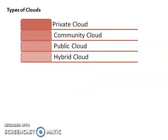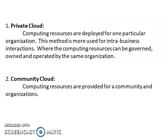Now I discuss various types of clouds: private cloud, community cloud, public cloud, and hybrid cloud. First is the private cloud. Computing resources are deployed for one particular organization. This method is more used for intra-business interactions, meaning the services are provided for only one organization where the computing resources are owned and operated by that same organization. That is called a private cloud.